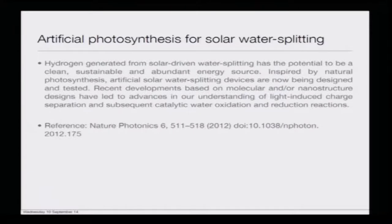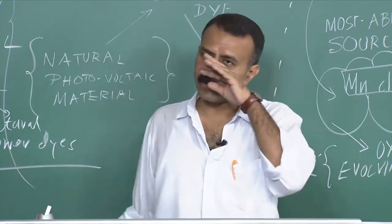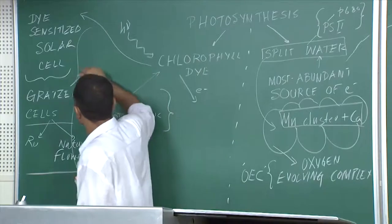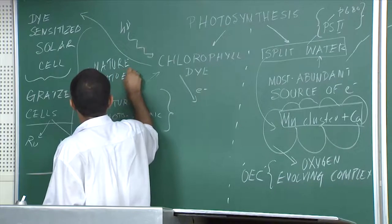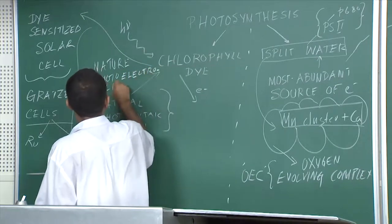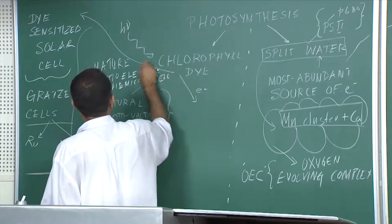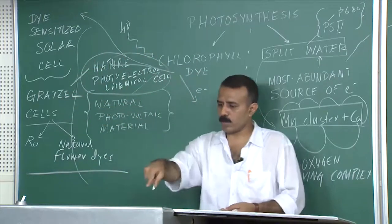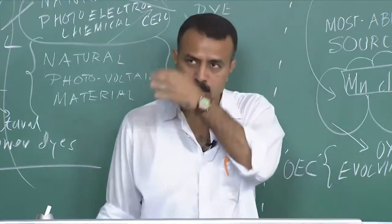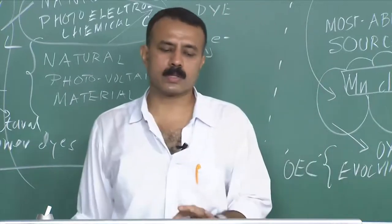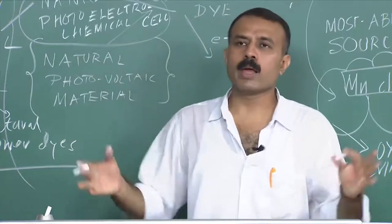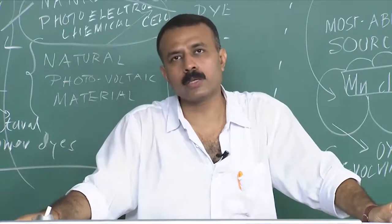There is a very nice review cited here in Nature Photonics from 2012 — please go through this review, as most of today's presentation is drawn from that paper. There is also a wonderful paper by Grätzel published in Nature titled 'Photoelectrochemical Cell' — please go through that paper. Additionally, there is a good paper by Helmut Tributsch, whose reference appears in the Nature Photonics paper — go through his work as well. These references will give you a very global idea of how the world is thinking and where it is all moving.